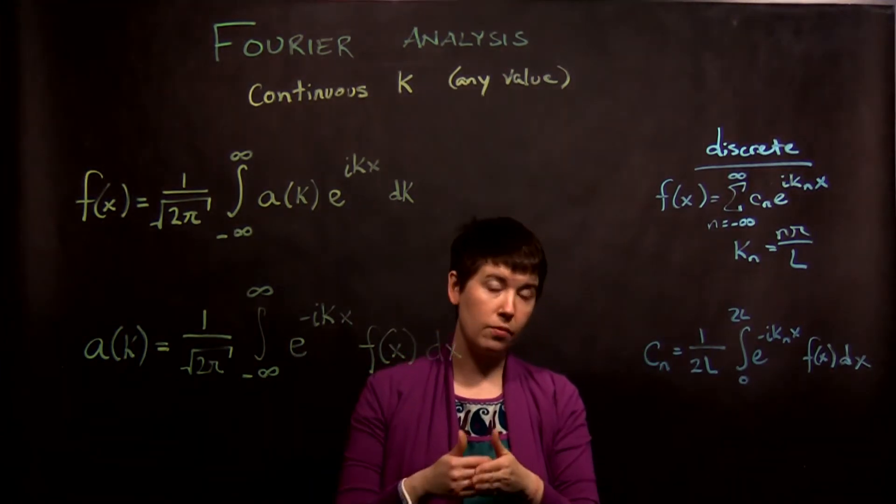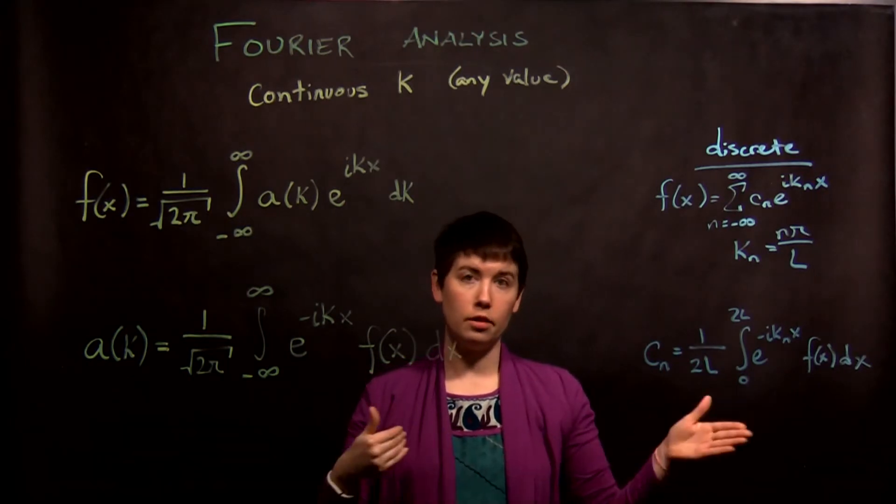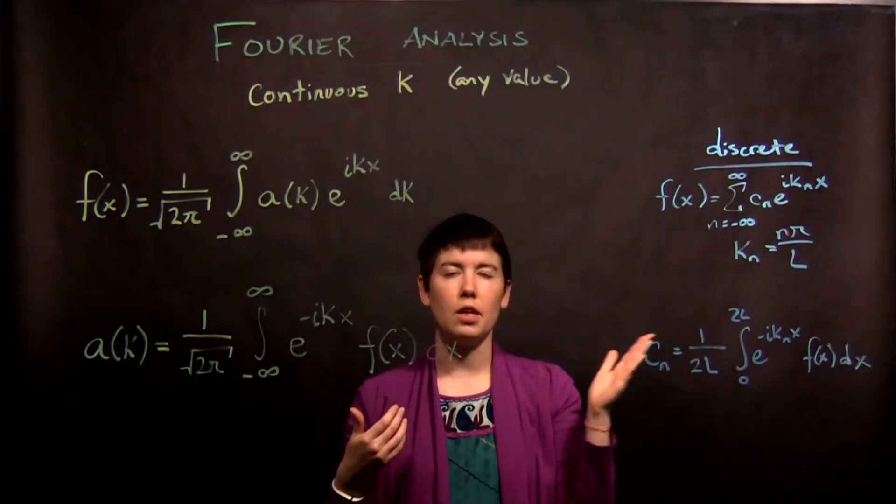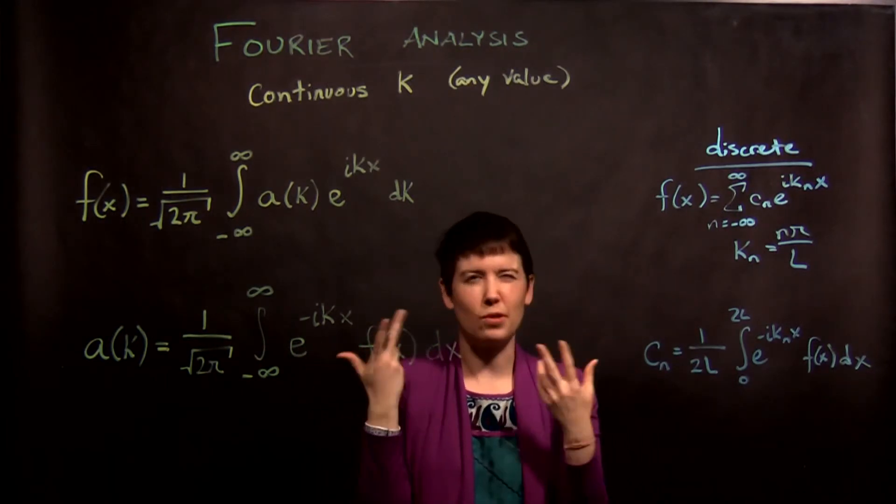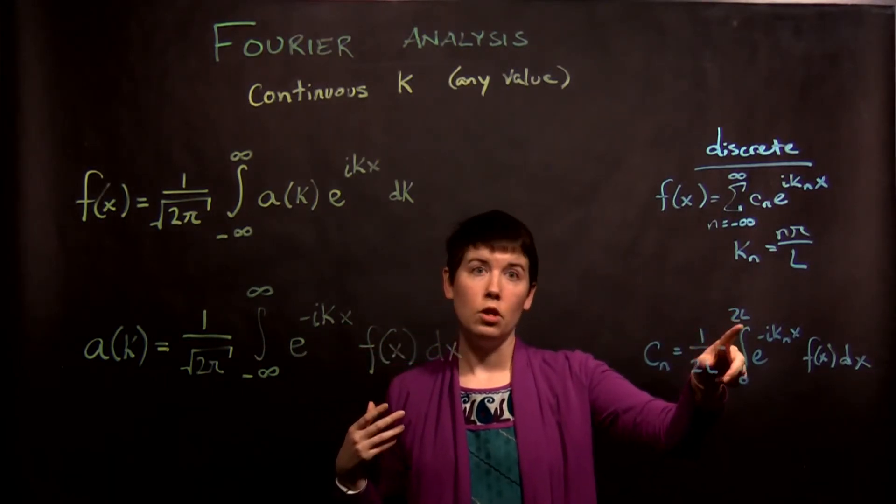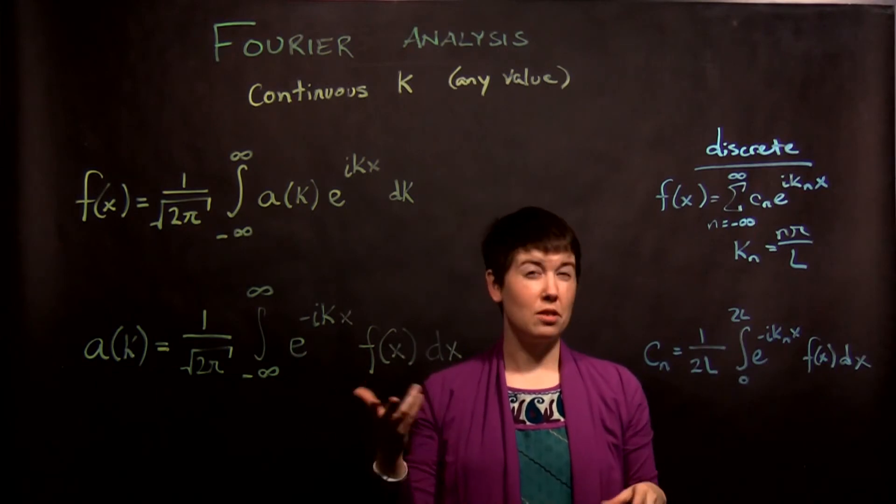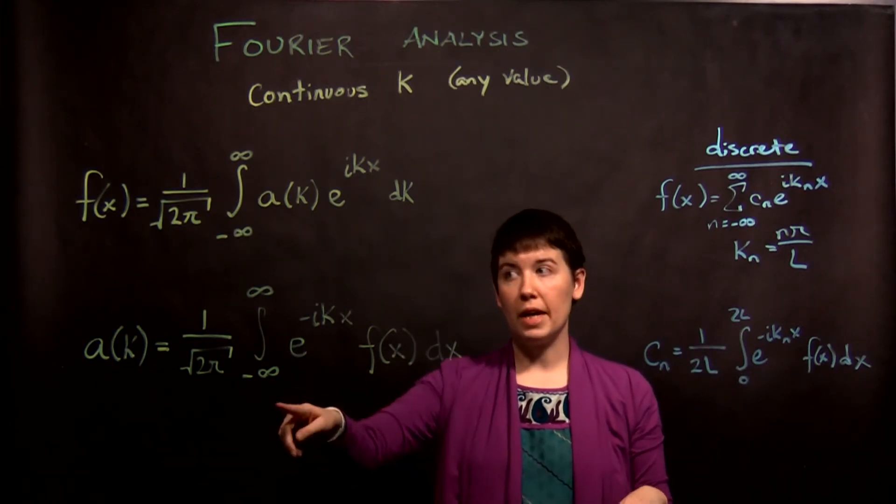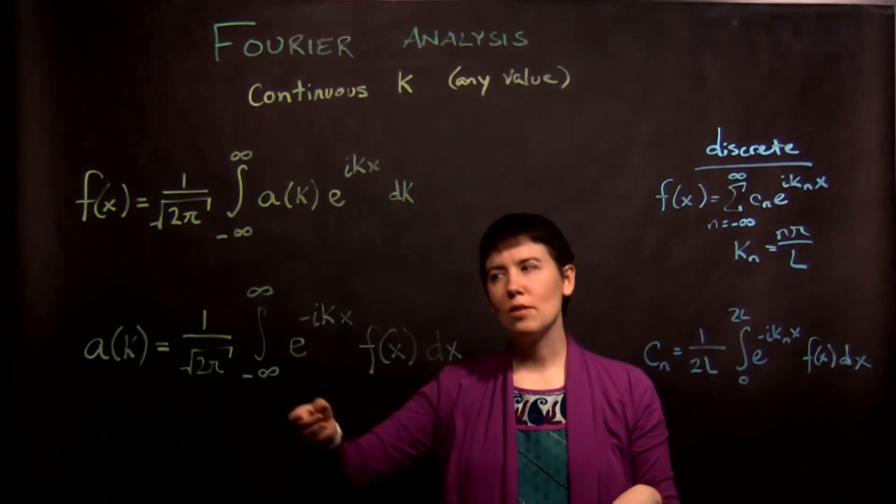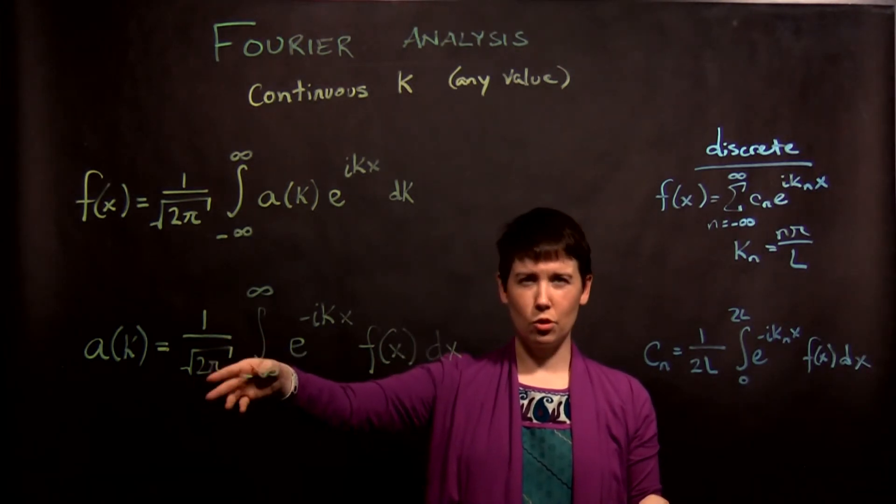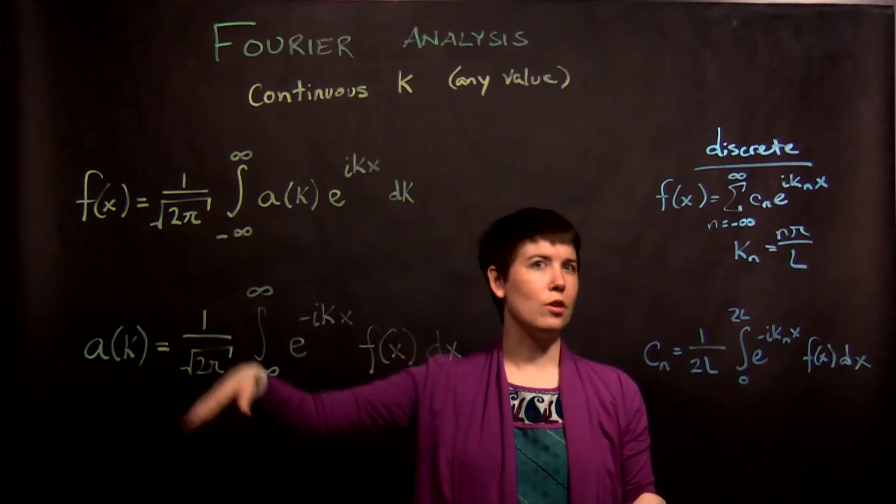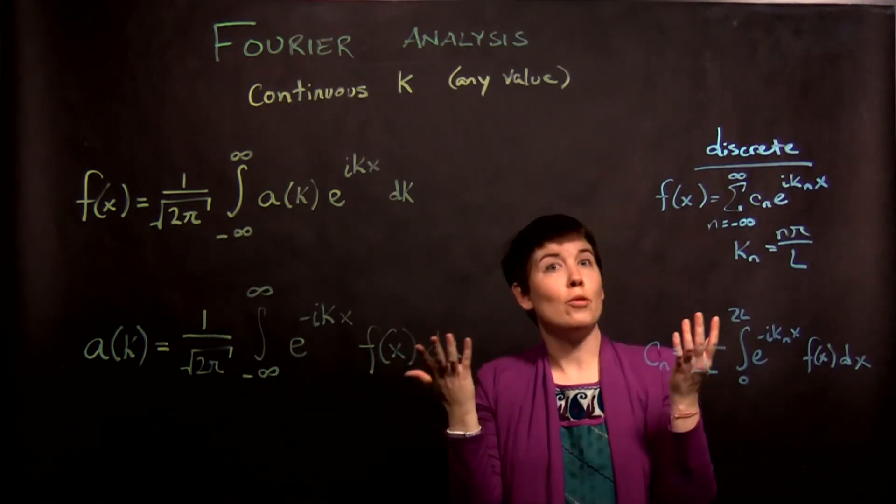Before we said that our wave function repeated on a period, wavelength—again space versus time—0 to 2L. Now it actually doesn't repeat, so we have to go from negative infinity to infinity. Because of that, our normalization coefficient changes to be 1 over square root of 2π. Again, don't worry too much about that, just remember that it has to be there.